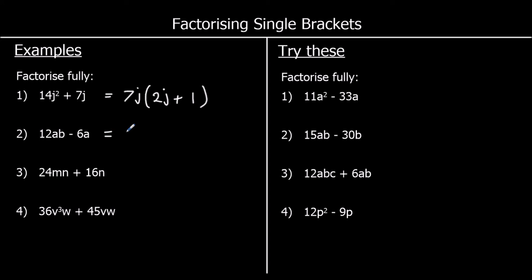Question 2: 12ab minus 6a. 12 and 6 — the biggest times table they're both in is the 6 times table, so we take 6 outside. And ab and a both have a as a factor, so we take a outside as well — giving us 6a outside the bracket. 6a times what makes 12ab? 6 times 2 makes 12, and a times b makes ab. And 6a times what makes negative 6a? That's negative 1.